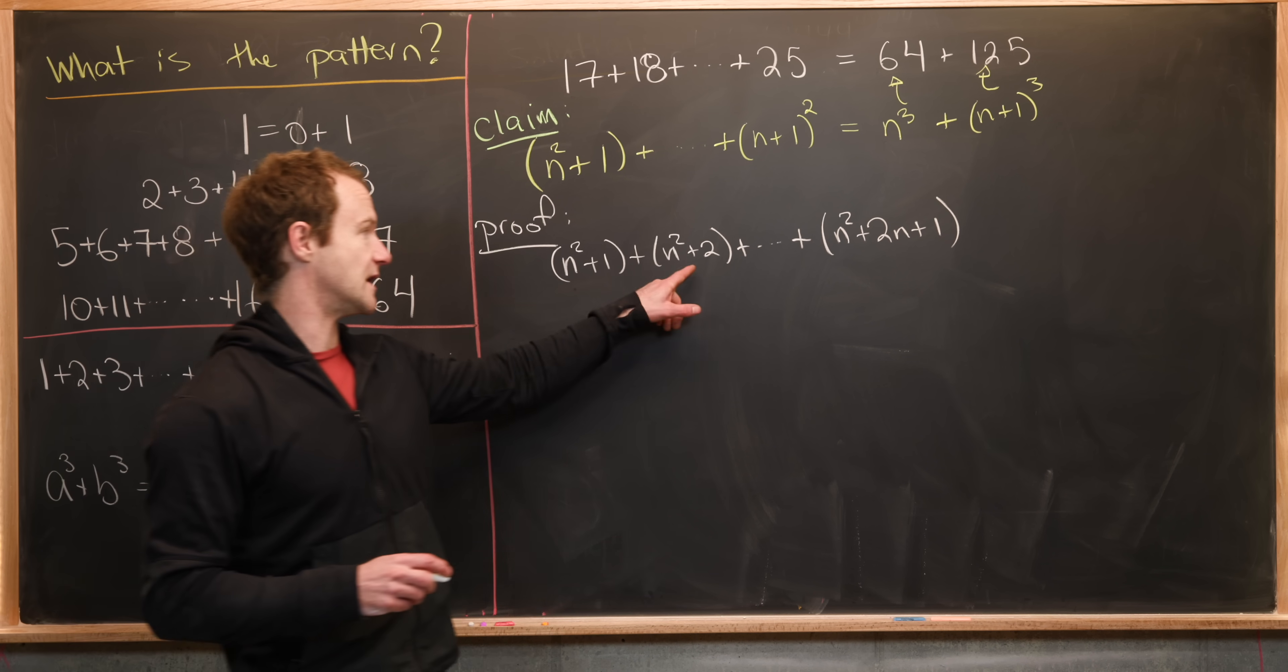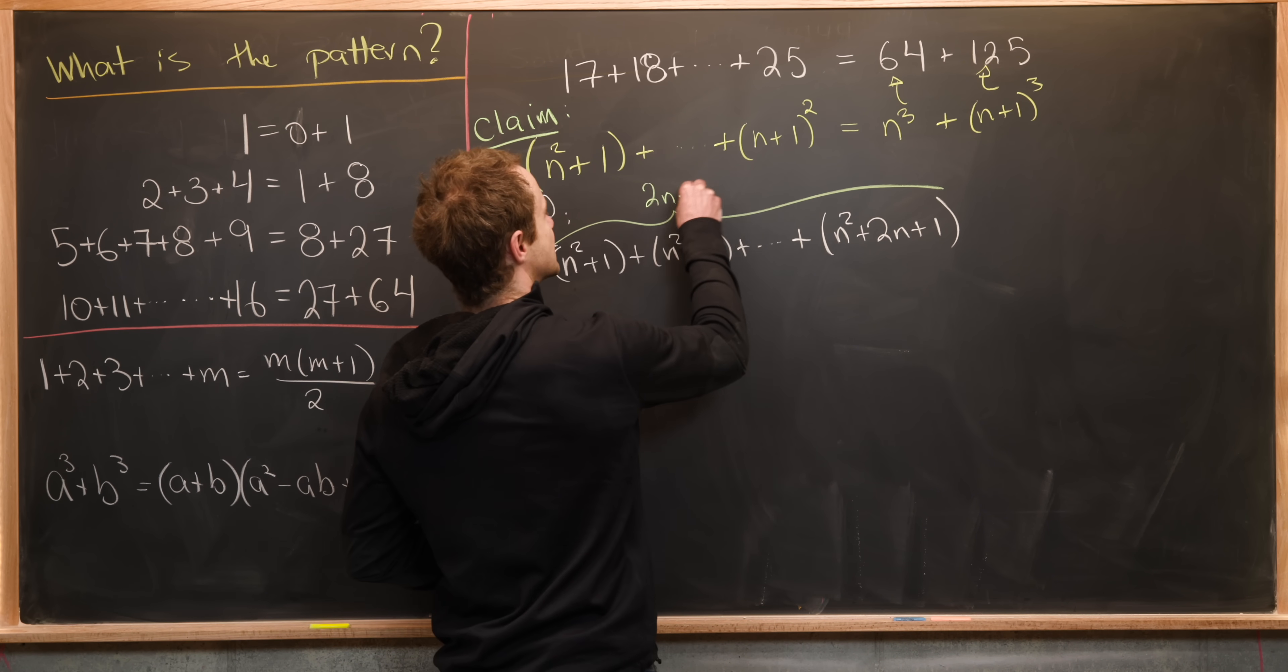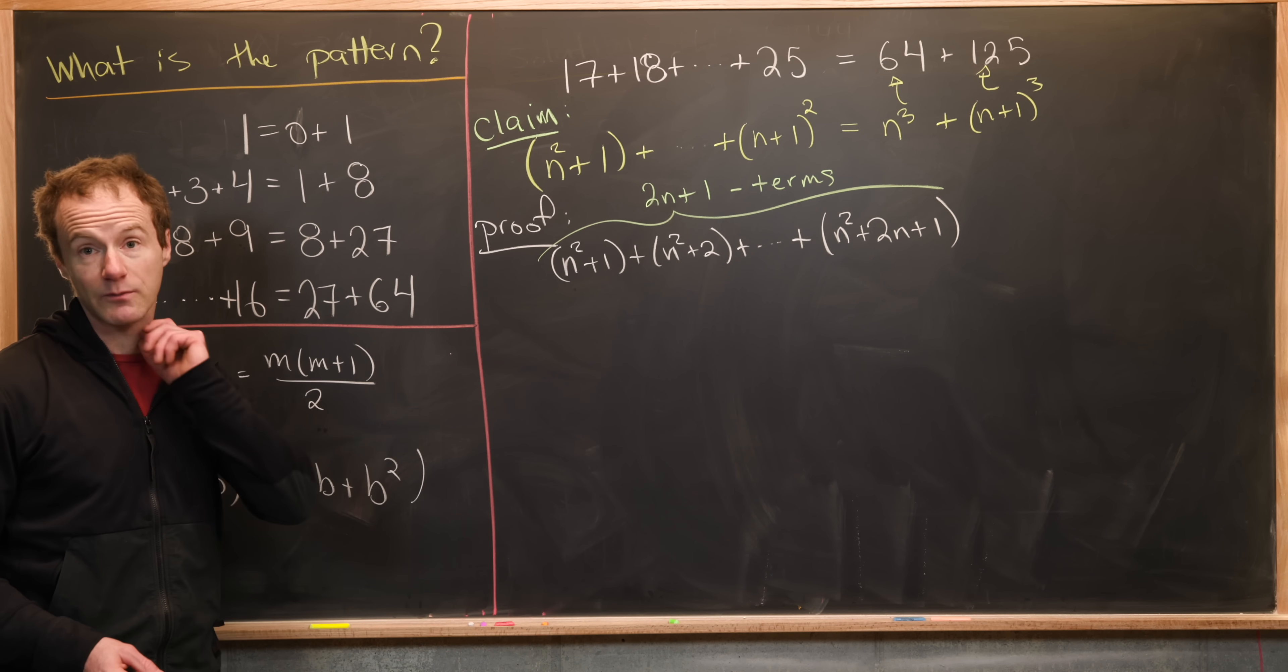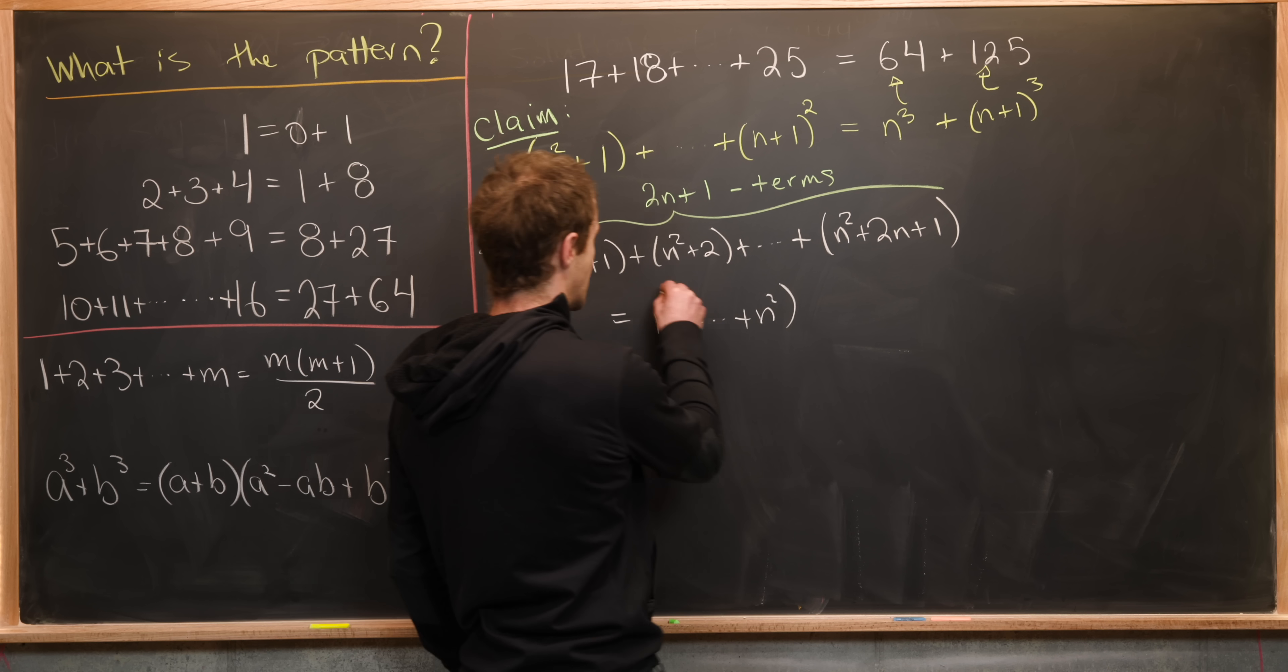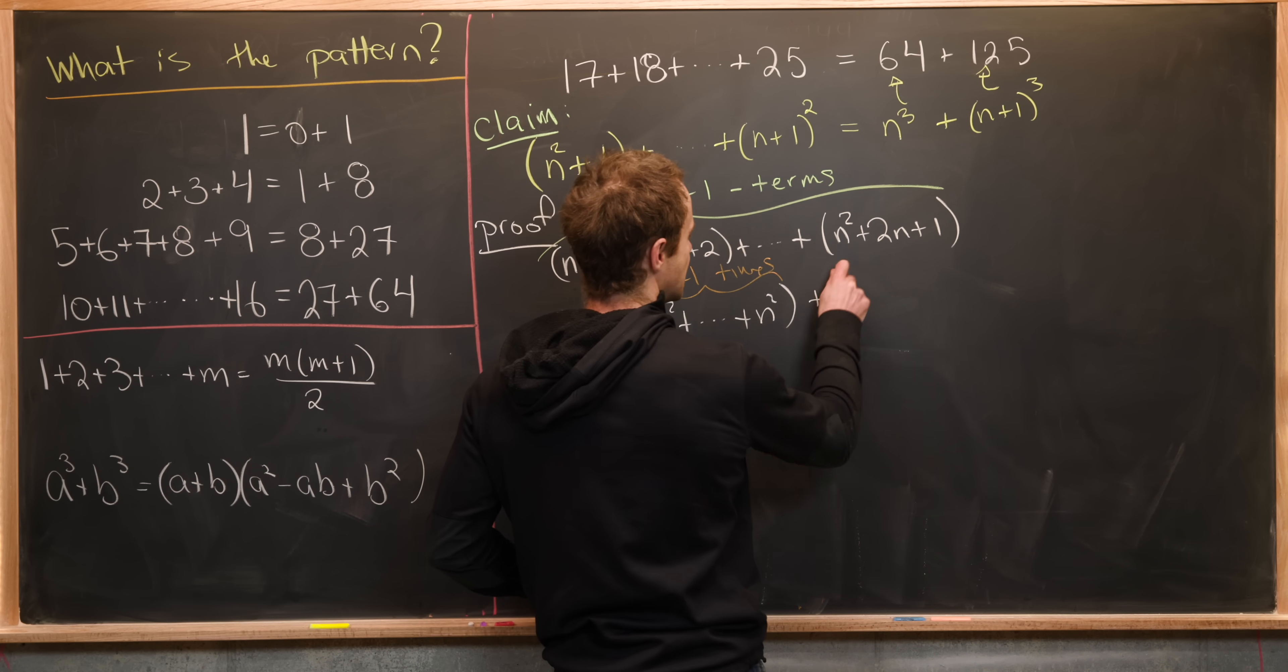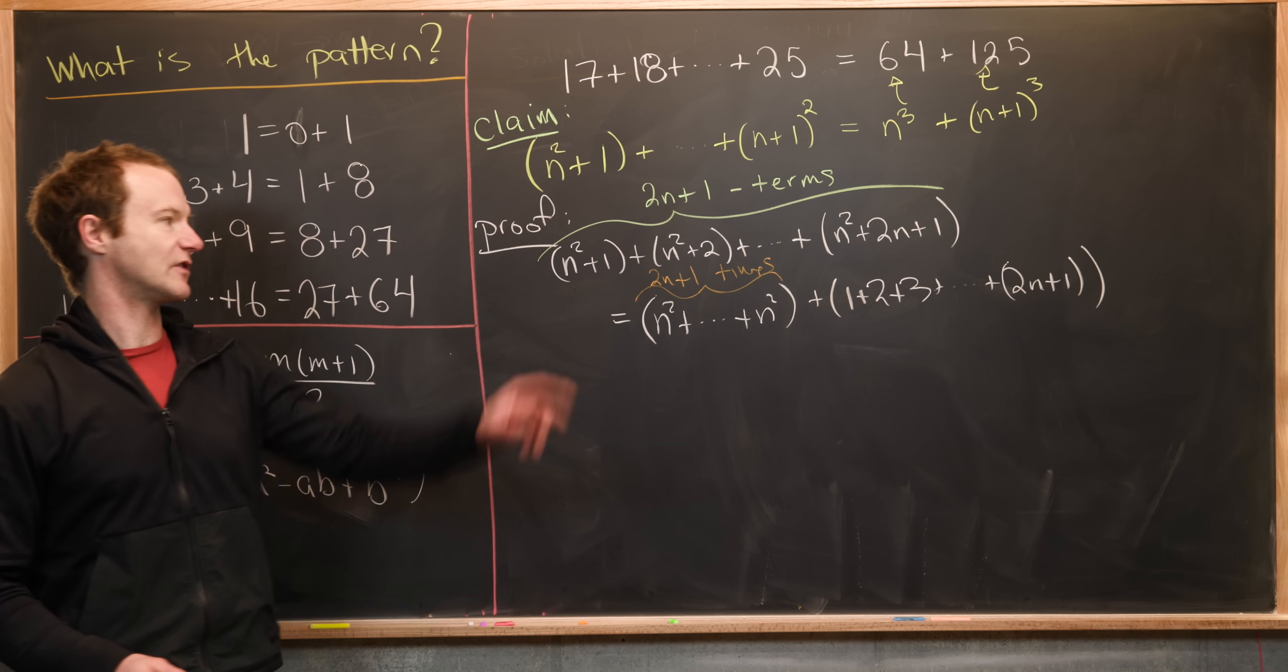Now I'm going to see that every term here has an n squared. And furthermore, we have exactly two n plus one total terms. That's because this is like the first term, the second term, all the way up to the two n plus one term. So we can break this into two pieces. We can break this into n squared plus n squared, two n plus one times. So let's write that here, two n plus one times. And then we have the triangular number one plus two plus three, all the way up to two n plus one from everything that's left over.